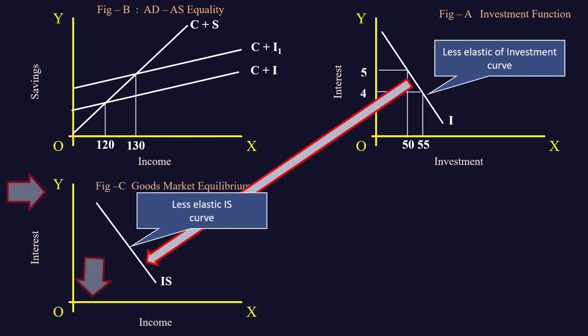It also shows negative relation between interest and income. The point to be noted here is: if investment curve is relatively less elastic, IS curve is also less elastic. If investment curve is more elastic, IS curve is also more elastic.